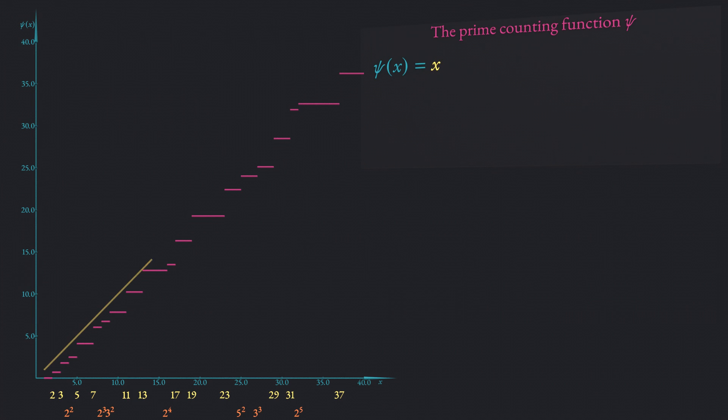In a first approximation this function psi grows like a linear function x. It fits even better when it is shifted slightly by a small constant roughly 0.8 that happens to be equal to the logarithm of 2π. And now keep your breath. By adding infinitely many more terms of the form x to the power of one particular number divided by this number we can almost exactly match the behavior of the psi function.